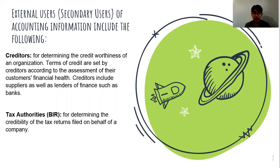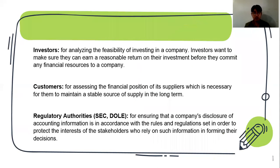For tax authorities such as the BIR, they need accounting information to determine the credibility of tax returns filed on behalf of the company. The BIR collects taxes from companies and businesses, so they need to know the profit and sales figures for each period in order to compute the tax that should be collected.